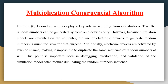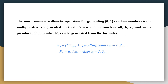As we all know, random numbers can be generated by electronic devices as zeros and ones by the voltage levels. However, simulation models are executed on the computer, and using electronic devices to generate random numbers is much too slow for that purpose. Also, electronic devices are activated by chance, making it impossible to duplicate the same sequence of random numbers. This is very important for debugging, verification, and validation of the simulation model, which can be obtained by duplicating the random number sequence. The most common arithmetic operation for generating random numbers is the multiplicative congruential method.